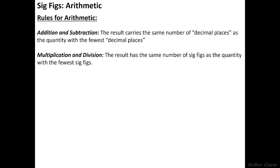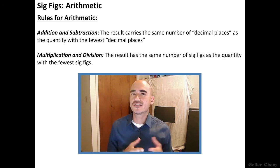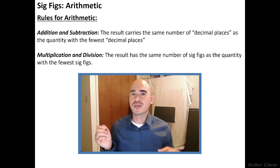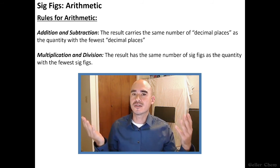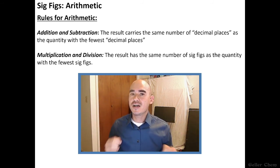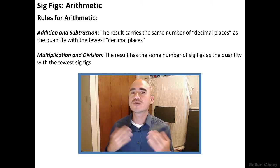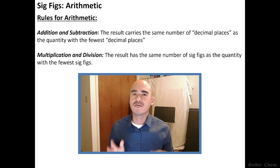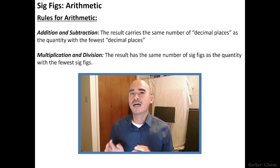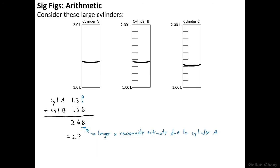As for multiplication and division, the result has the same number of sig figs as the quantity with the fewest sig figs. So I'm going to show you a couple of demonstrations of this rule in effect. And the first thing I'm going to do is the simplest thing, which is to just multiply the two volumes in cylinders A and B together.